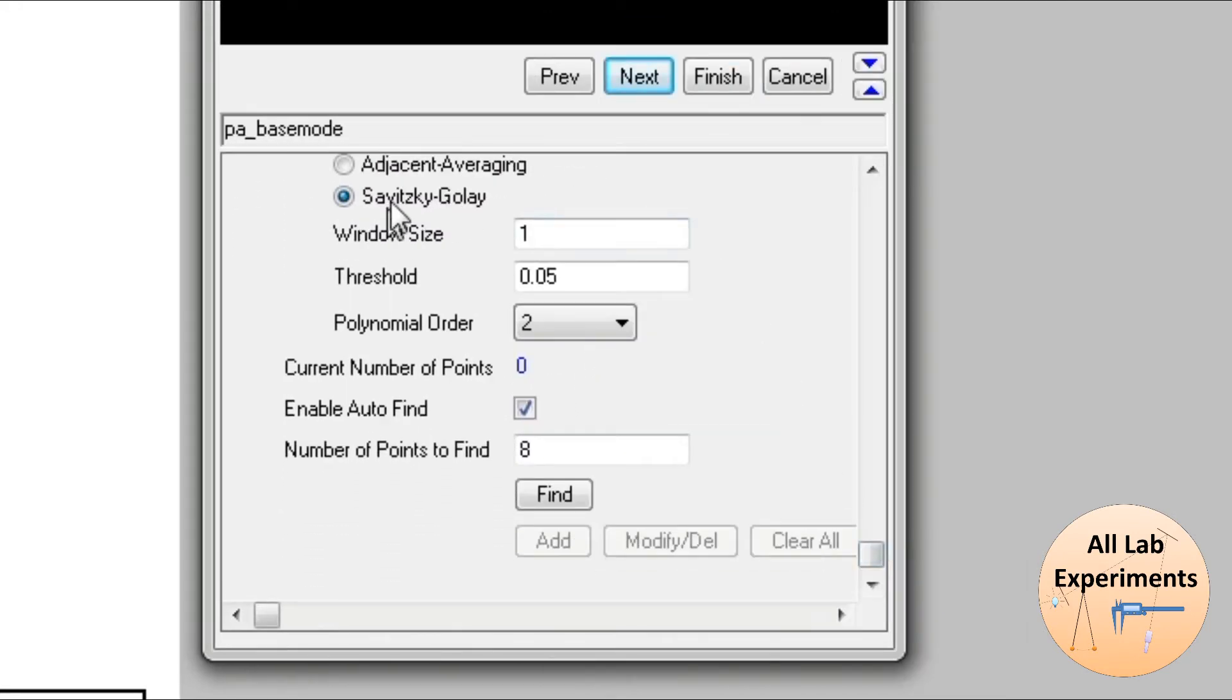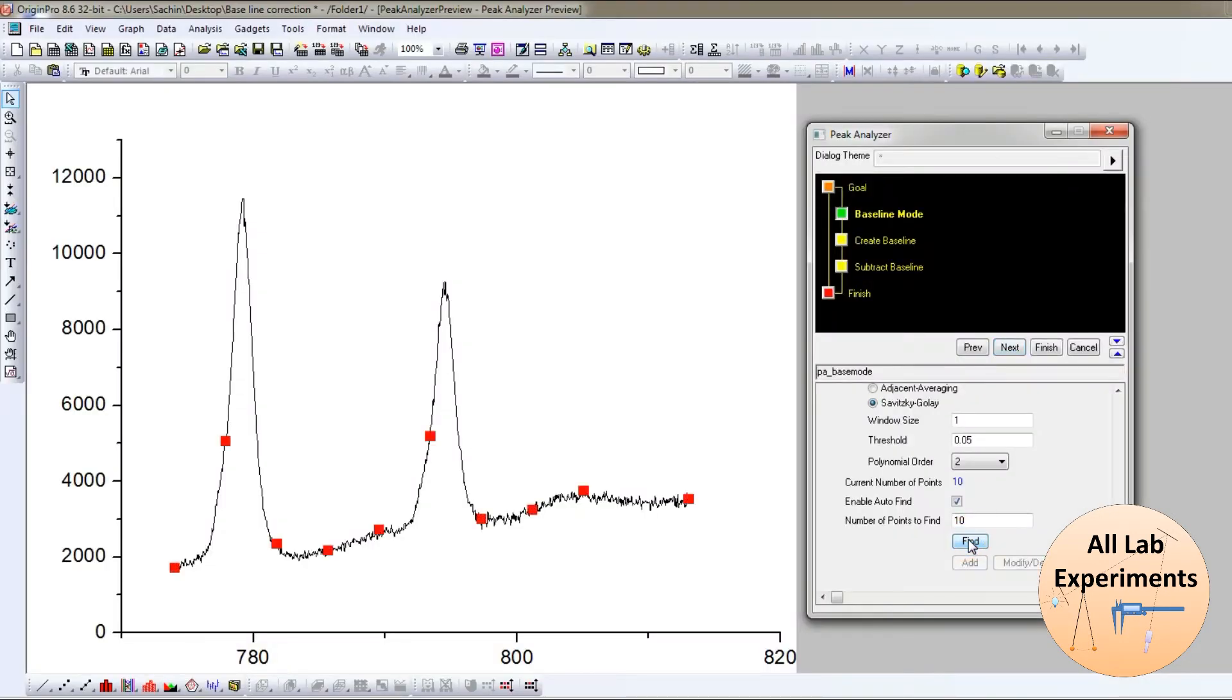Now in this fitting you can choose the number of points required for the fitting. I can choose it to be 10 and then press find. It is randomly finding some points which the program thinks is the baseline, but we can edit this later on. After that you press next.